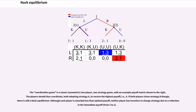The coordination game is a classic two-player, two-strategy game. The players should coordinate, both adopting strategy A, to receive the highest payoff, i.e., 4. If both players chose strategy B though, there is still a Nash equilibrium. Although each player is awarded less than optimal payoff, neither player has incentive to change strategy due to a reduction in the immediate payoff.